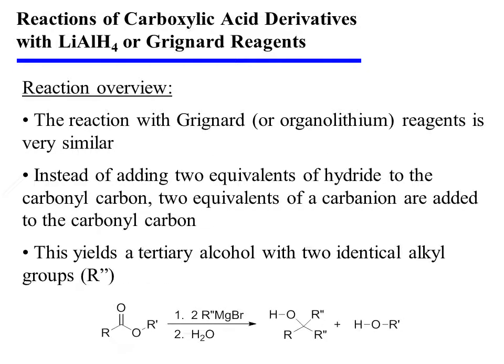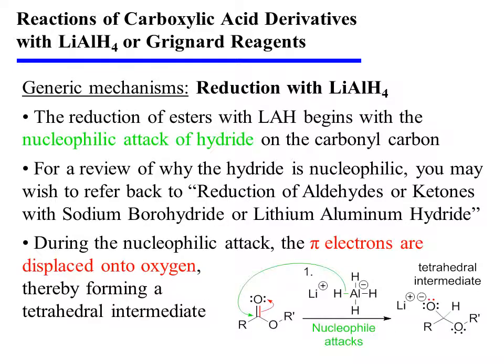The reaction with Grignard, or organolithium, reagents is very similar. Instead of adding two equivalents of hydride to the carbonyl carbon, two equivalents of a carbanion are added to the carbonyl carbon instead. This yields a tertiary alcohol with two identical alkyl groups. Now let's take a look at the mechanisms for these processes.